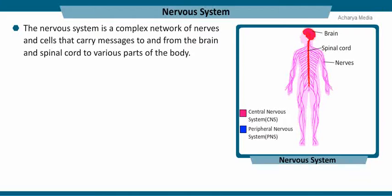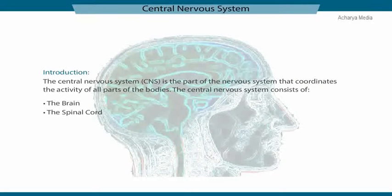The nervous system is a complex network of nerves and cells that carry messages to and from the brain and spinal cord to various parts of the body. The central nervous system, or CNS, is the part of the nervous system that coordinates the activity of all parts of the body. The central nervous system consists of the brain and the spinal cord.